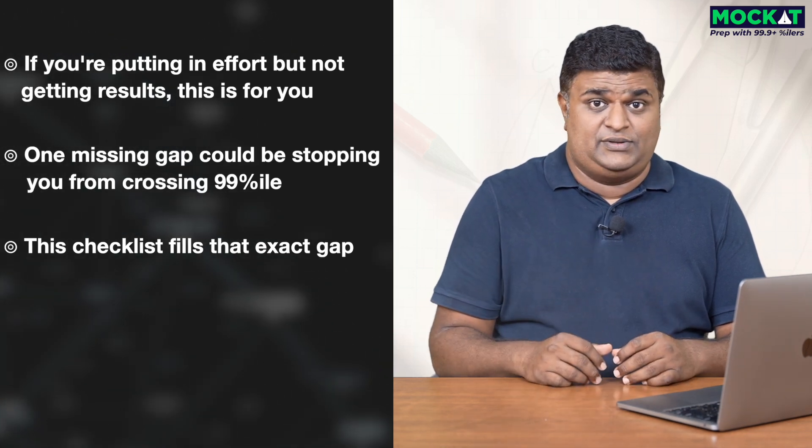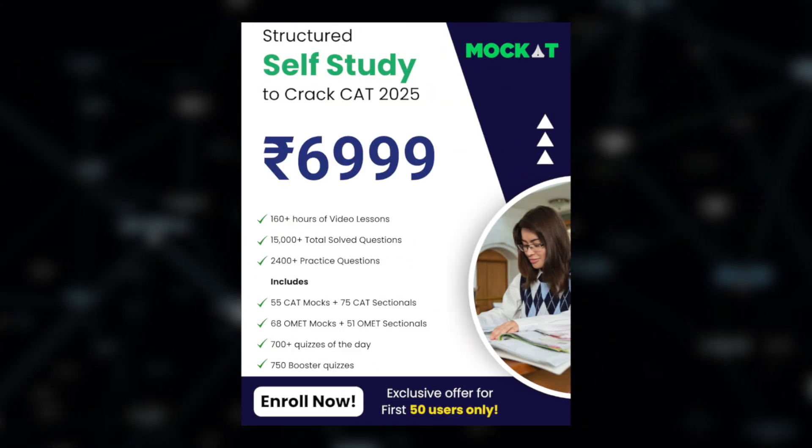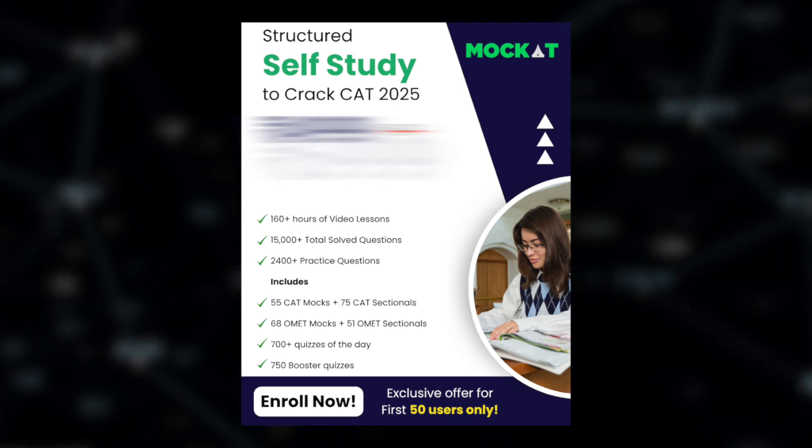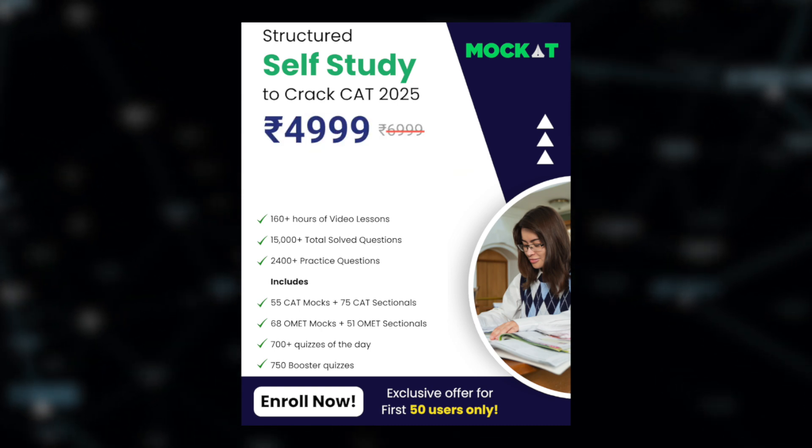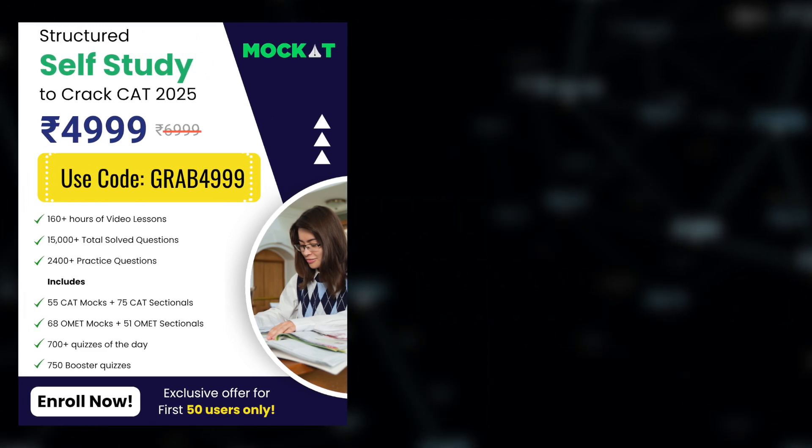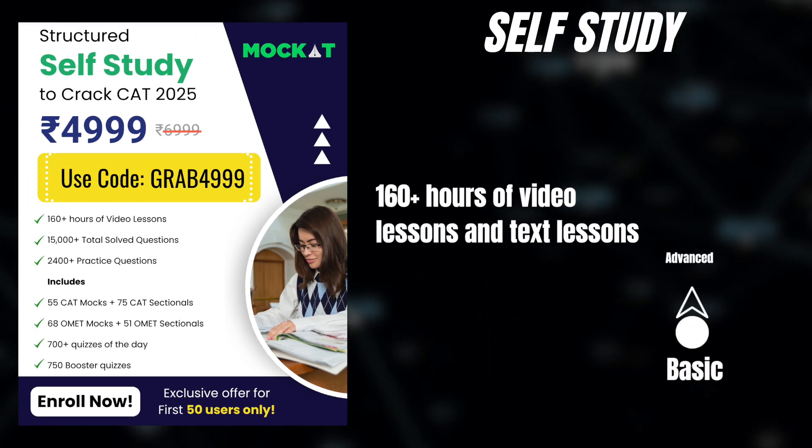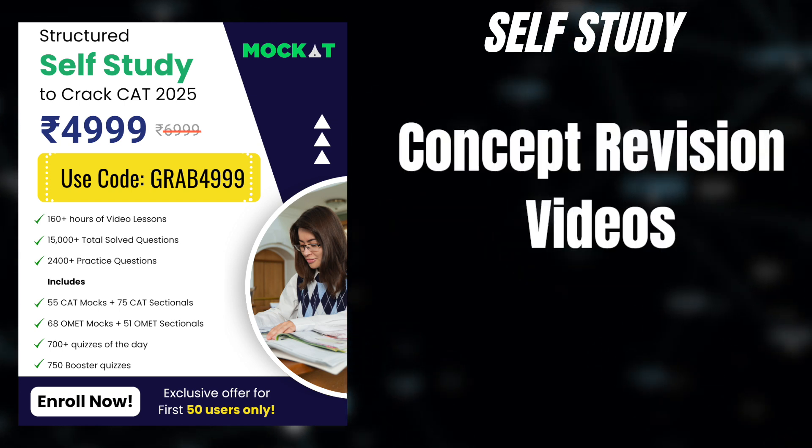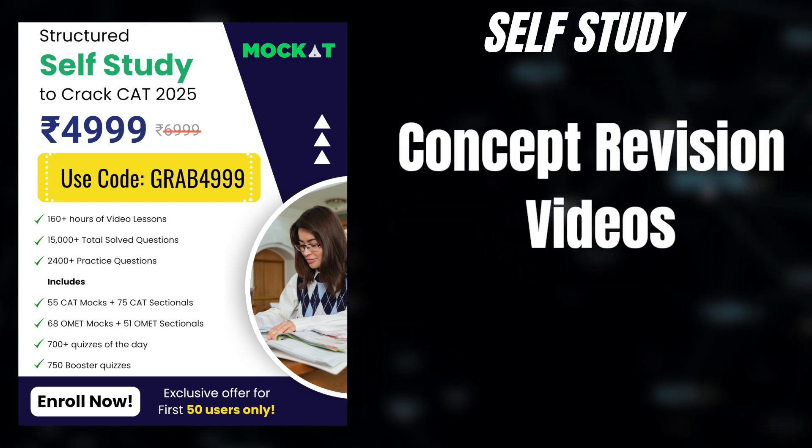Now, before I get on with it, let me tell you that we are offering the complete self-study pack for 2025 at just rupees 6999. And you know what? We're going to drop it further by another 40%, bring it down to rupees 4999, if you use the coupon code GRAB4999. What does this self-study course contain? It contains all the video lessons from the basics, going up all the way to the advanced concepts. It also contains all the concept revision videos, which I'm going to speak about in this video with the concept checklist.